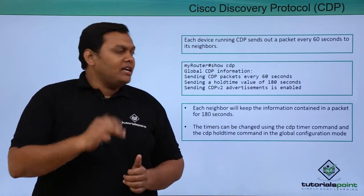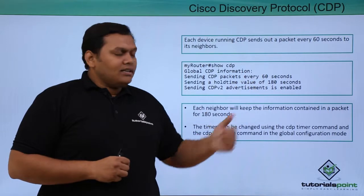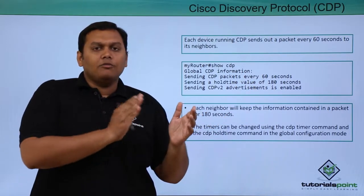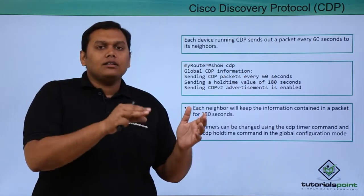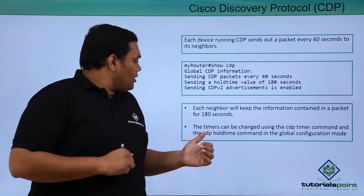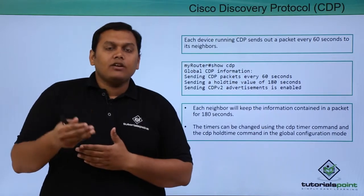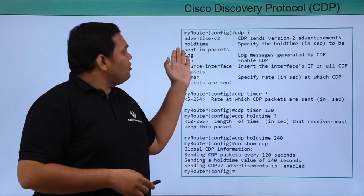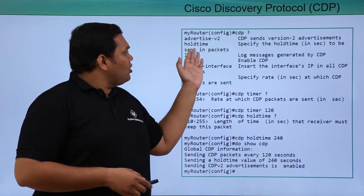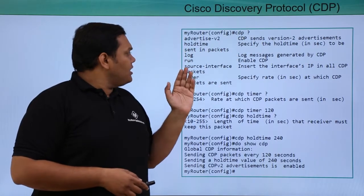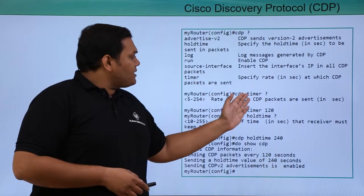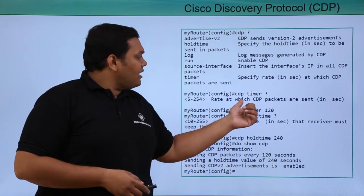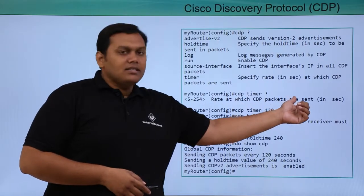The hold timer is 3 times the packet send interval of 60 seconds. That means if the packet is not received by the neighbor for more than 180 seconds, it will trigger that the line is down. These timers can be changed using the 'CDP timer' command. The syntax with a question mark shows advertisement details, hold time, sent packets, and source interface options.